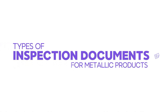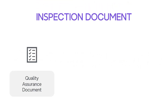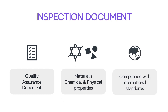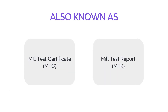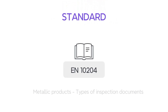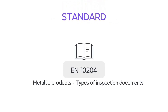In this video, we are going to see about types of inspection documents for metallic products. An inspection document is a quality assurance document that certifies a material's chemical and physical properties and states that a product made of metal is in compliance with an international standard. Inspection documents are also known as mill test certificates and material test reports. The most commonly followed standard for inspection documents is EN 10204 for metallic products.